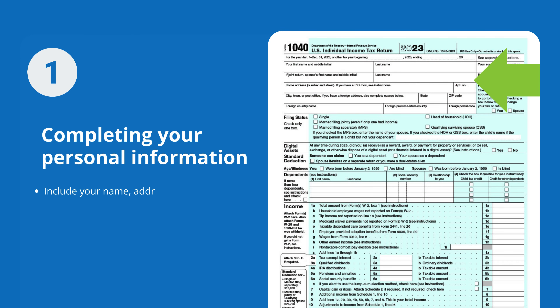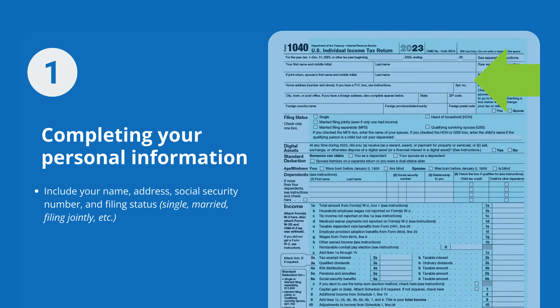Once you have your documents, start by completing your personal information. Include your name, address, social security number, and filing status — single, married filing jointly, etc.